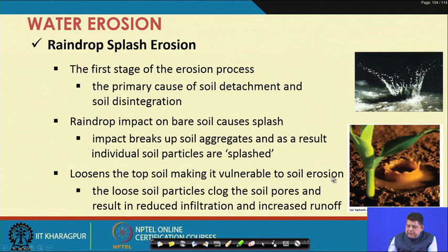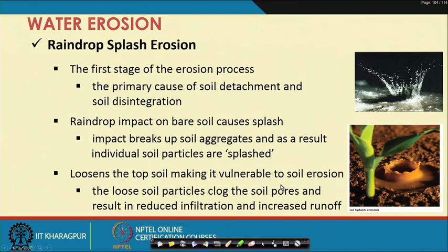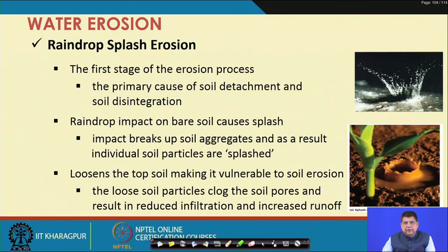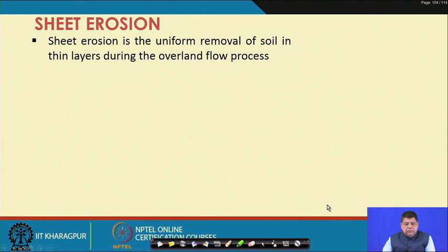The loose particles also clog the soil pores on the soil surface. As we saw in the previous lecture, when soil pores are blocked, infiltration is reduced, which results in increased runoff. When runoff increases, the loose soil particles on the surface are carried away — this is raindrop splash erosion.